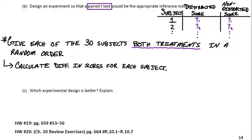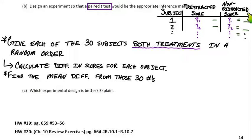So after we give each subject both treatments randomly, we calculate the difference in scores for each subject. So the difference for subject 1, we'd write that here. Difference for subject 2, we'd write that here. And once we have the difference for each one of the 30 subjects, we're going to find the mean difference from those 30 numbers.